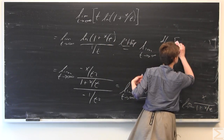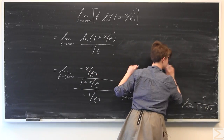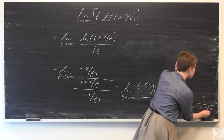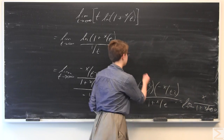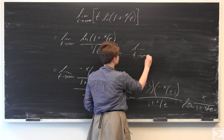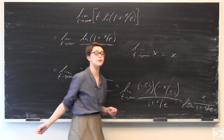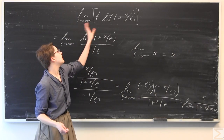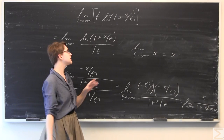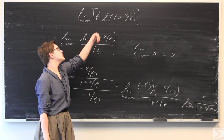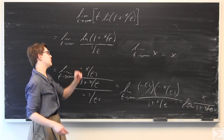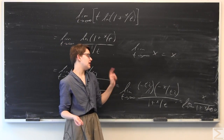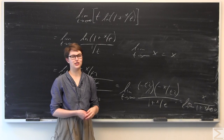Finally, we evaluate the limit as t goes to infinity. As t goes to infinity, x/t goes to 0, so we're left with x over 1, which is just x. Since x is not dependent on t, the limit equals x. The key intuitive move at the beginning — rewriting t·ln(1 + x/t) as ln(1 + x/t) over (1/t) — allowed us to apply L'Hôpital's rule and ultimately get x as our answer.